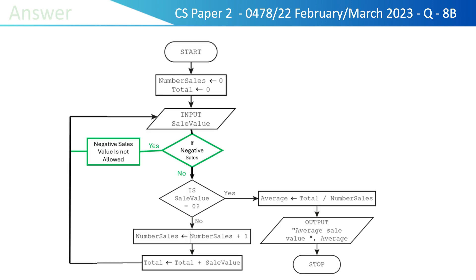So just after user inputs the sales, there should be a decision box to check if sales is negative, like shown in the green color. This decision box should decide that, in case sales is inputted as negative, there should be a message to user that negative sales are not allowed and user should be directed to input sales again.